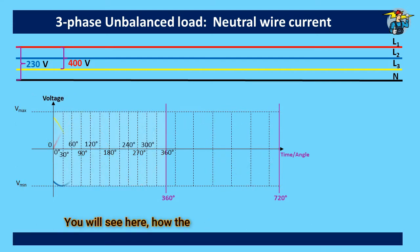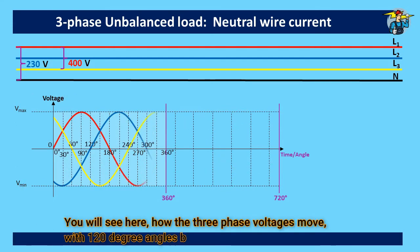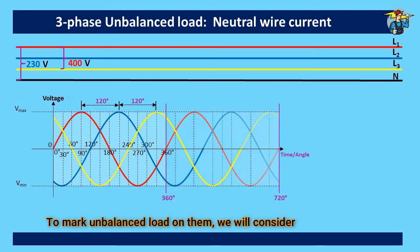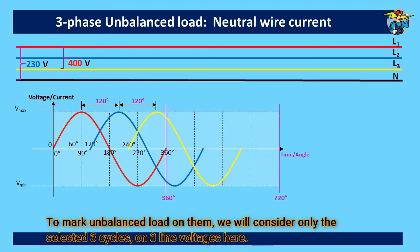You will see here, how the 3 phase voltages move with 120 degree angles between those. To mark unbalanced load on them, we will consider only the selected 3 cycles on 3 line voltages here.